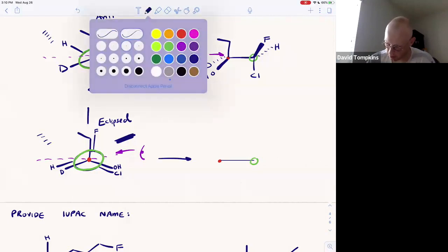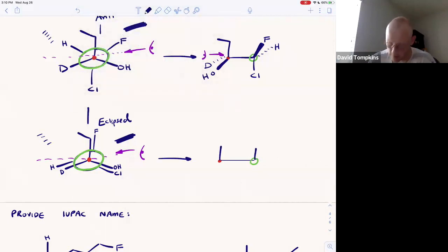On the front and back carbon, there's one bond pointing up. These are zero degrees from one another. We have the ethyl on the front carbon and the fluorine on the back. The hydroxyl and chlorine are both wedged, both going down underneath this horizontal line—OH on the front carbon and chlorine on the back. Hydrogen and deuterium are both going down and dashed. Deuterium on the front carbon, hydrogen on the back.